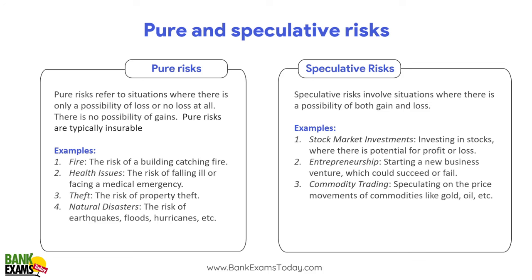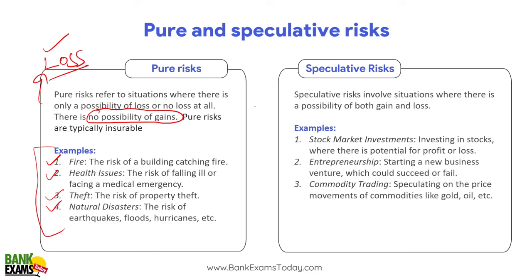What are pure and speculative risk? Pure risk refers to a situation where there is no possibility of making money — only loss. If there's a fire in someone's house or office, a health issue, a theft, or natural disaster, the person is going to lose money with no possibility of gain. What is speculative risk? Here there is a possibility of profit. The person can make money or lose money — stock market investments, entrepreneurship, commodity trading. Pure risks are insurable by insurance companies, while speculative risks are managed using hedging techniques.